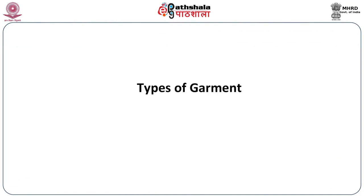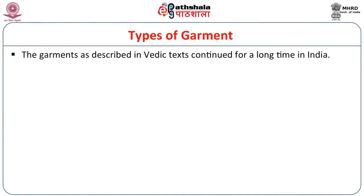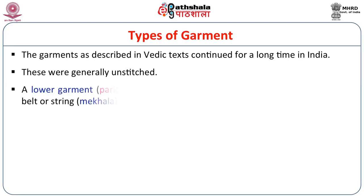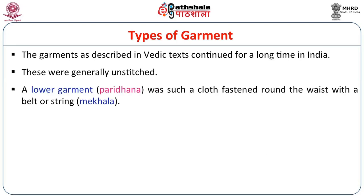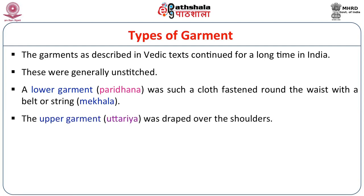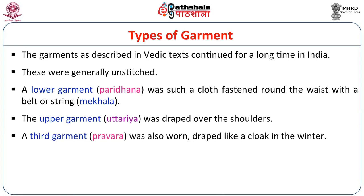Now let us come to the types of garments. We shall start with the Vedic period, where in the context of the Vedic texts, the dresses represented there continued for a long period. Those were generally unstitched. A lower garment, which is paridhana, was a cloth fastened round the waist with a belt or string called the mekhola. The upper garment is uttariya, which was draped over the shoulders. And there is a third garment, pravara, which was also worn, draped like a cloak in the winter.